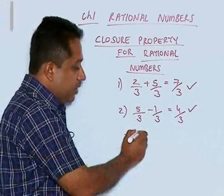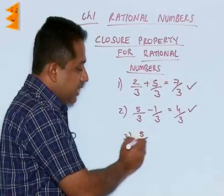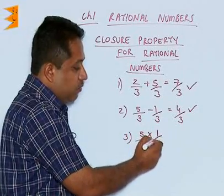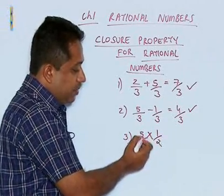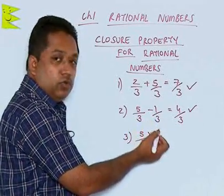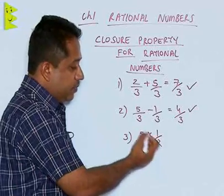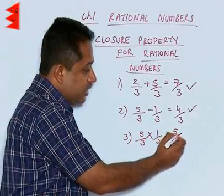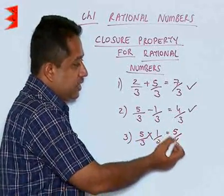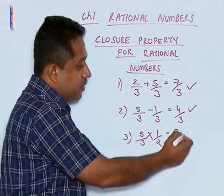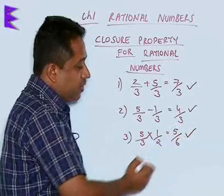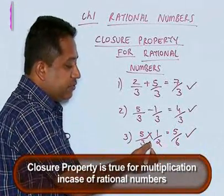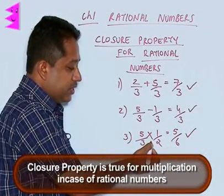Third case, let us see multiplication. Let us multiply 5 by 3 and 1 by 2. 5 by 3 is a rational number, 1 by 2 is also a rational number. When we multiply these, we get 5 upon 6, which is again a rational number. Therefore, I can say that the closure property holds good in case of multiplication.